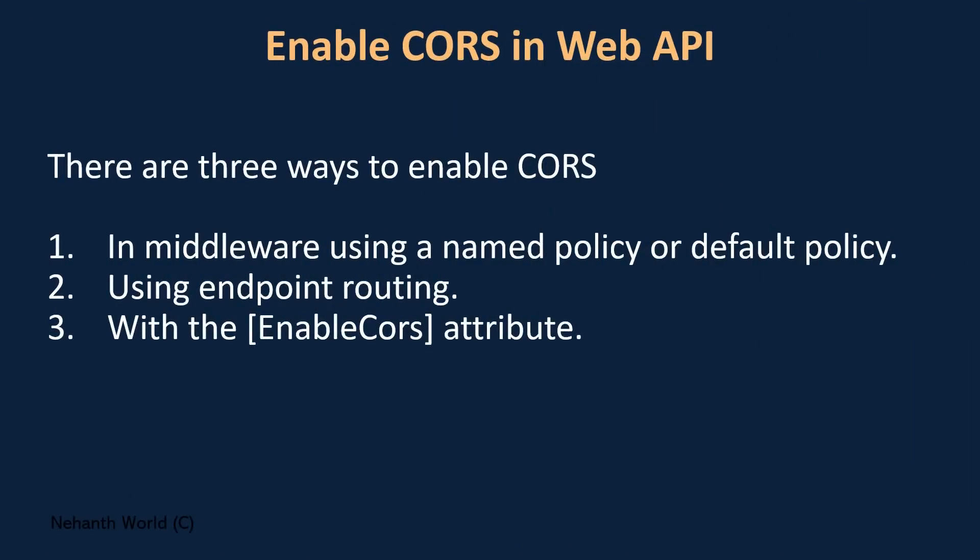When it comes to enabling CORS in our Web API application, we can do that in three different ways. The first one is using the middleware, the second one is using endpoint routing, and the third one is using the EnableCors attribute. Most of the time people use middleware to configure the CORS policies. In this tutorial I will show you all three different ways to enable CORS in our application.